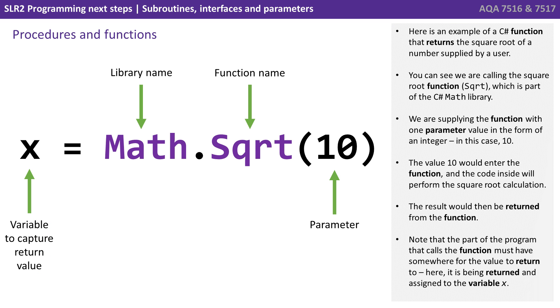So here's an example of a C sharp function that returns the square root of a number supplied by user. You can see we're calling the square root function SQRT, which is part of the C sharp math library. We're supplying the function with one parameter value in the form of an integer, in this case 10. The value 10 would enter the function and the code inside will perform the square root calculation. The result would then be returned from the function. Note that the part of the program that calls the function must have somewhere for the value to return to. Here it's been returned and assigned to the variable X.